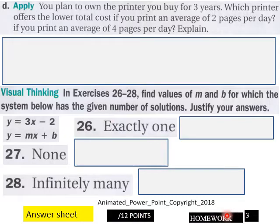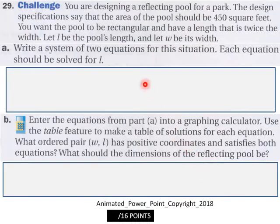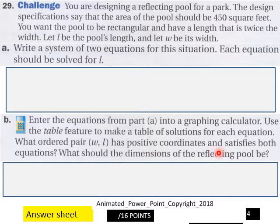And then for page 4, challenge question here. Write a system of two equations for this system. Each equation should be solved for l. It's for part A of this up here. And then part B, what should the dimensions of the reflecting pool be? You got 16 points here for page 4.